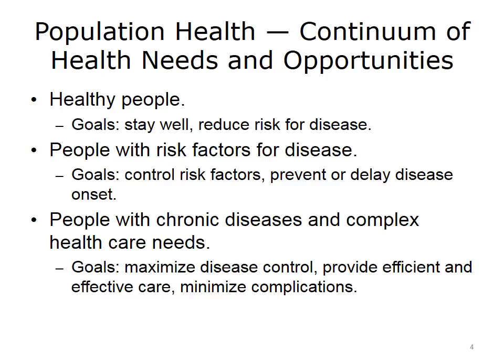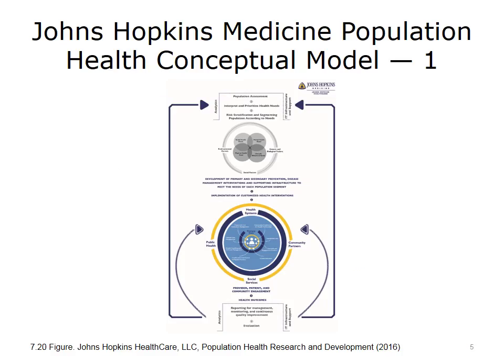There are those in the population who have already contracted chronic diseases or have complex health care needs. The goals in this portion of the population are to maximize disease control, provide efficient and effective care, and minimize complications. In Lecture A of Unit 7, Population Health Management Interventions, you were introduced to Johns Hopkins Medicine's Population Health Conceptual Model, which begins with prioritizing the population for interventions and ends with evaluation of those interventions. We will continue to walk through this conceptual model for the remainder of today's lecture.